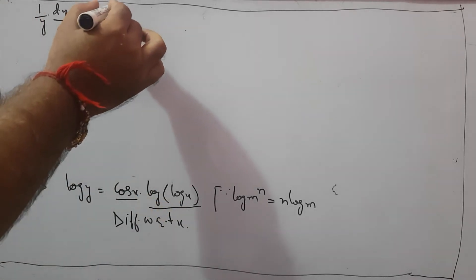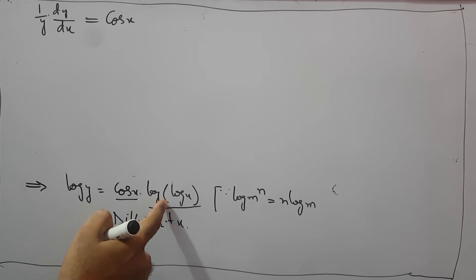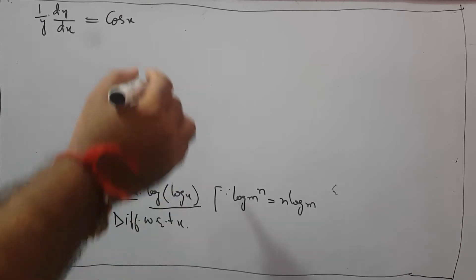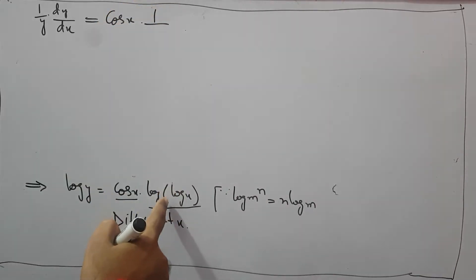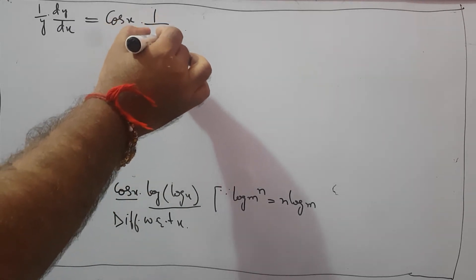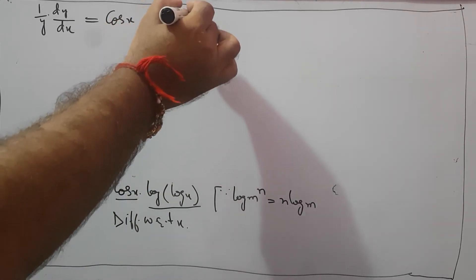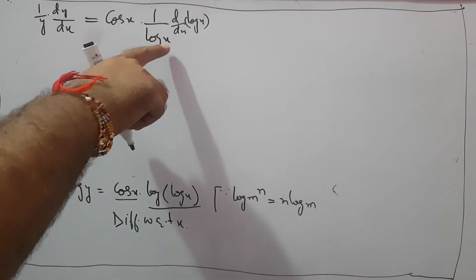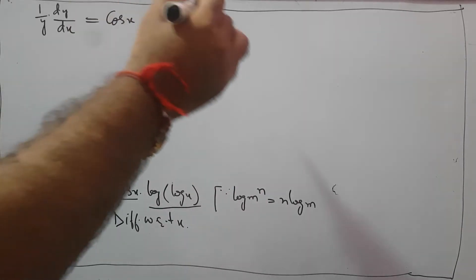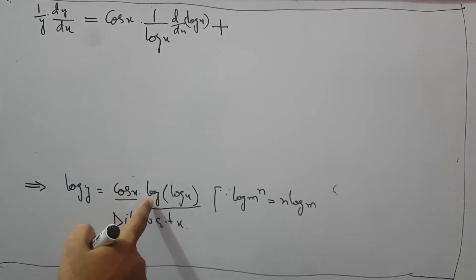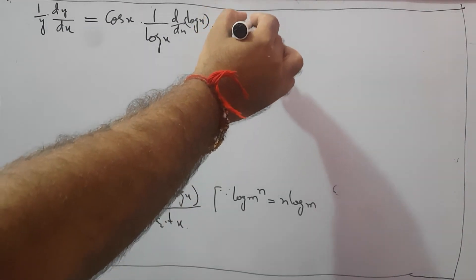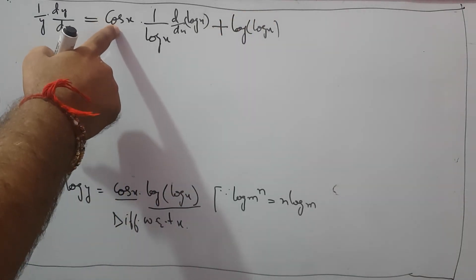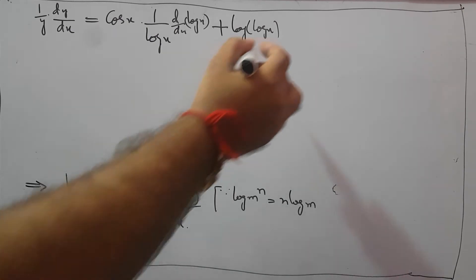First function as it is, meaning cos x, times the derivative of the second. What is the derivative of log(log x)? This whole log x plays the role of x in log, so it becomes 1 upon log x. But since on the place of x we have log x, we need to further differentiate log x. If only x were there, no further derivative would be needed, but since we have a composite function, we differentiate further. Then we write plus, take log(log x) as constant, and multiply by the derivative of cos x, which is minus sin x.